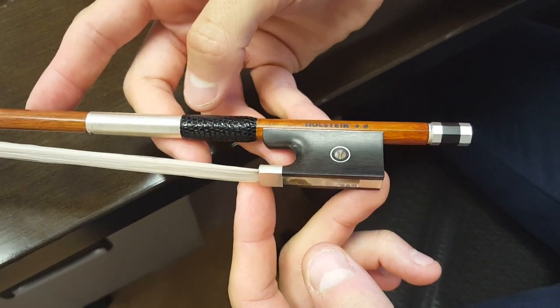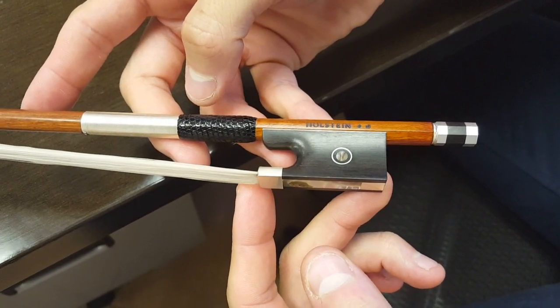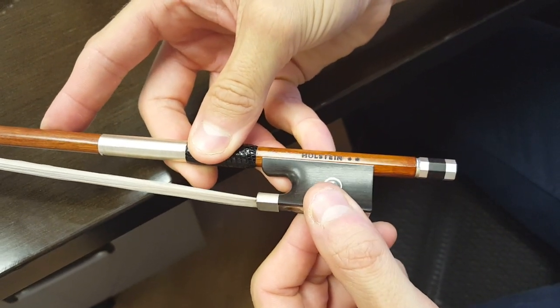I'm going to show how you can adjust the violin bow frog in order to make it either tighter or looser on your stick.